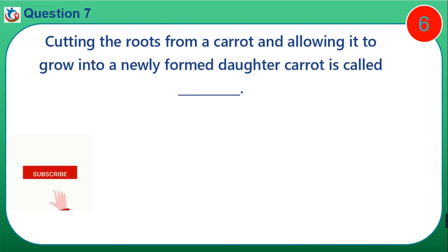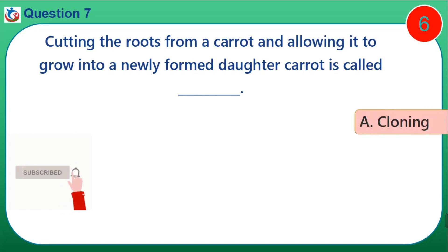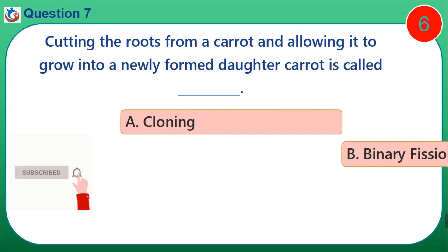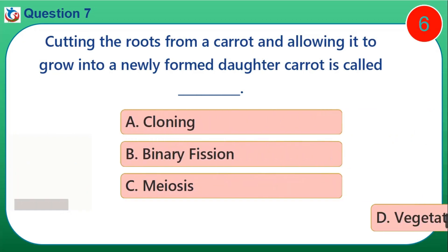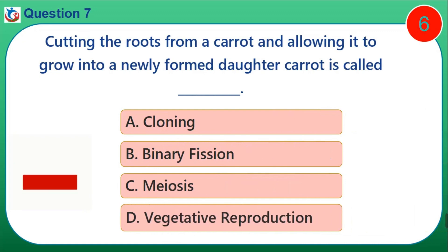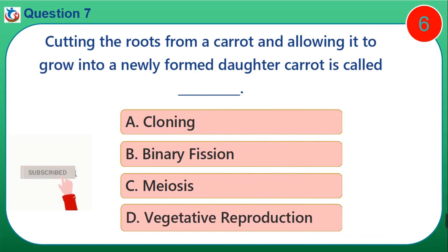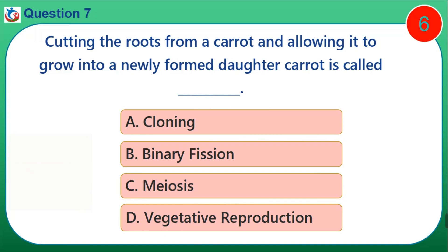Question 7. Cutting the roots from a carrot and allowing it to grow into a newly formed daughter carrot is called: A. Cloning. B. Binary fission. C. Meiosis. D. Vegetative reproduction.